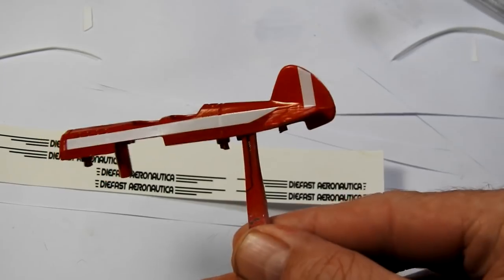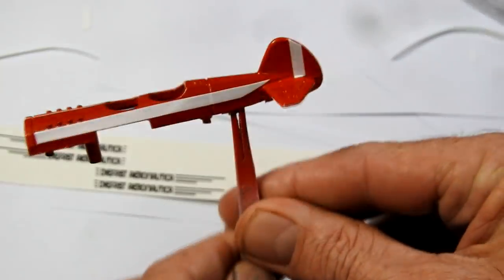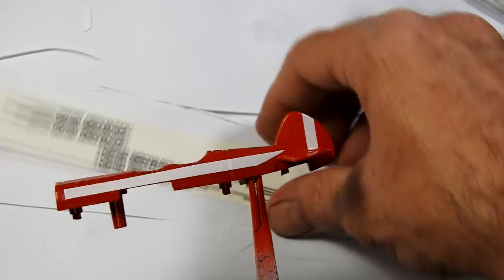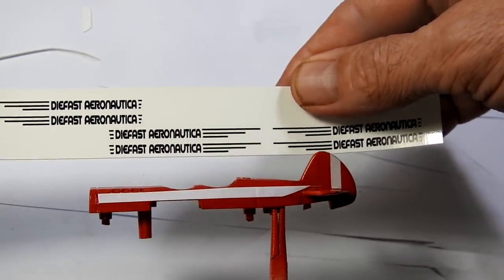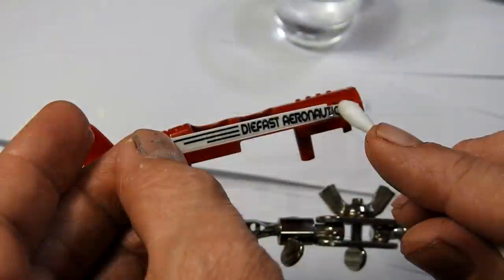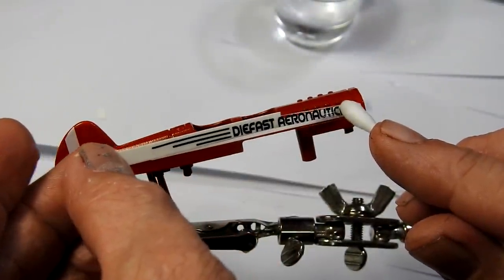Print out the Die Fast Aeronautica livery on some clear decal paper. I'm going to apply this over the white stripes on the side there.